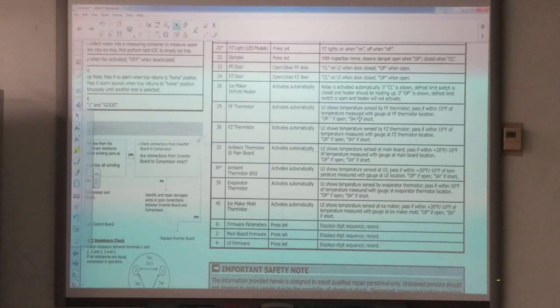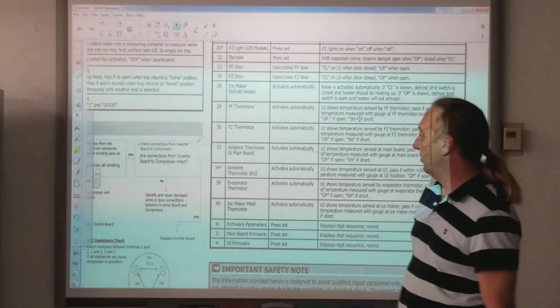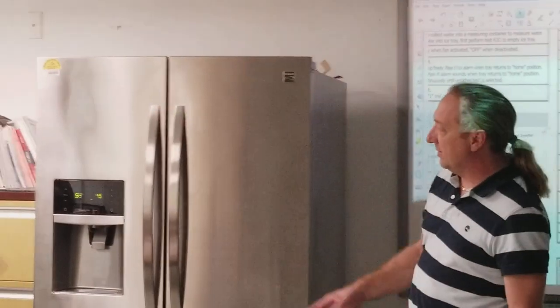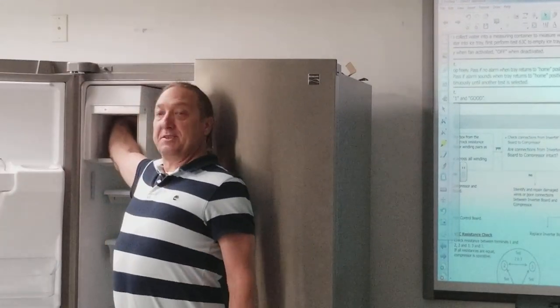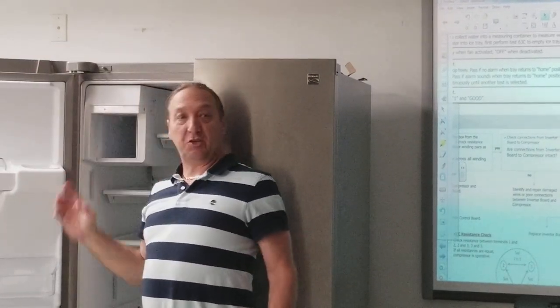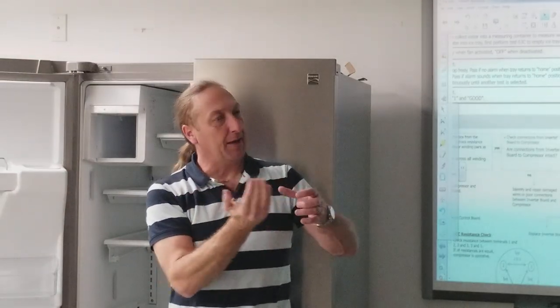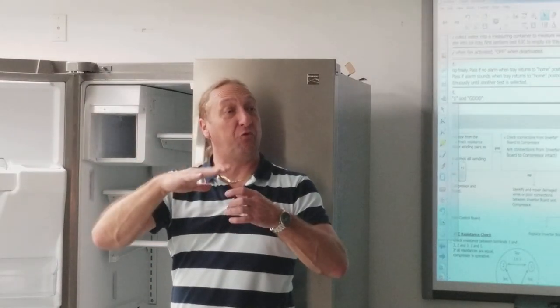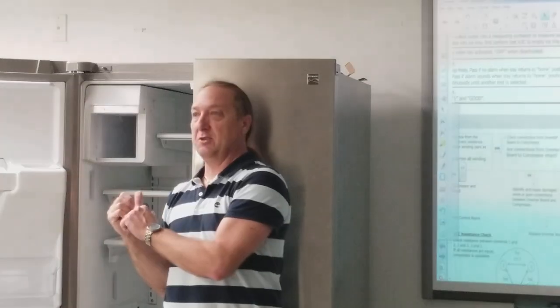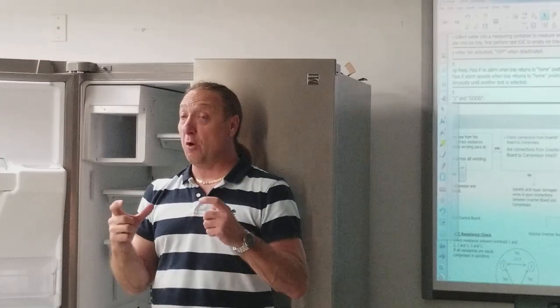Okay, let's move on down to number 45, the ice maker mold thermistor. That would be the ice maker mold itself, but this is a plastic tray, what we call a flex tray ice maker. It's a little tiny plastic tray, and on the bottom of that tray is a little thermistor. It fills up with water. When that water gets cold enough and that water freezes, it tells the board, hey, the tray is frozen.